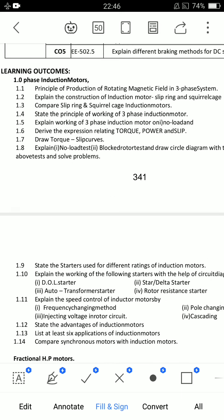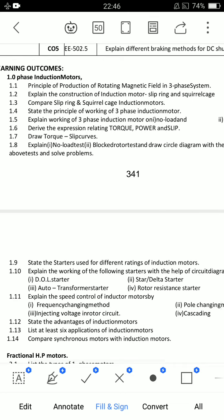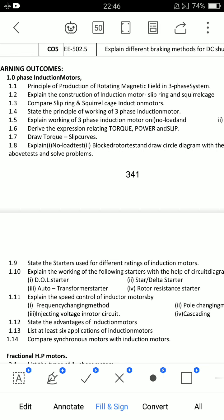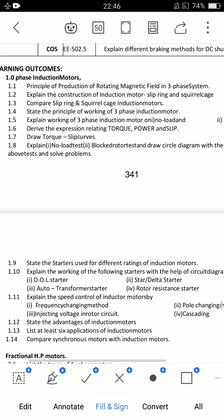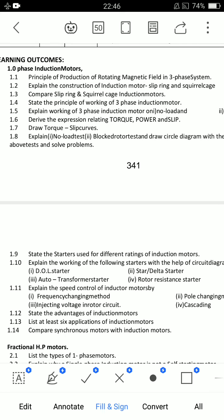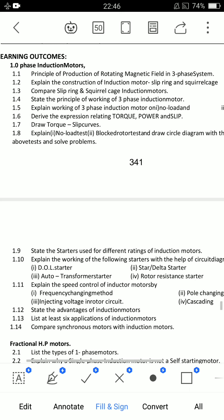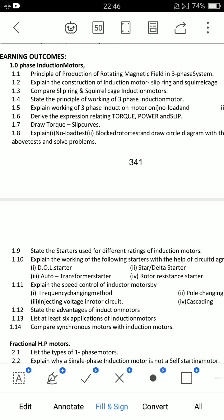And unit number one, explain the construction of induction motor, slip ring and squirrel cage. 1.2 very very important question. And derive the expression relating torque, power and slip. 1.6. Explain no load test, blocked rotor test. Second, draw a circle diagram with the help of about us and solve problems. Now I am not going to tell you. Like, problems and theories are not going to tell you. You have to prepare what you want. 1.8.